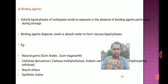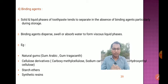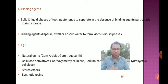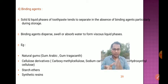The next ingredient is binding agents. The solid and liquid phases of toothpaste tend to separate in the absence of binding agents, particularly during storage. Binding agents disperse, swell, or absorb water to form viscous liquid phases. Examples include natural gums like gum arabic and gum tragacanth, cellulose derivatives such as carboxymethyl cellulose, sodium carboxymethyl cellulose, and hydroxyethyl cellulose, as well as starch ethers and synthetic resins.